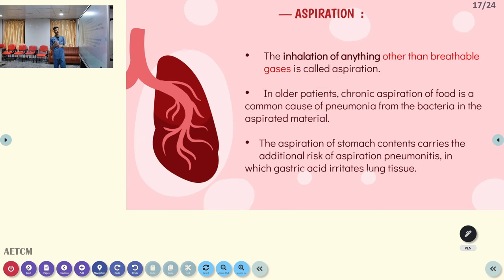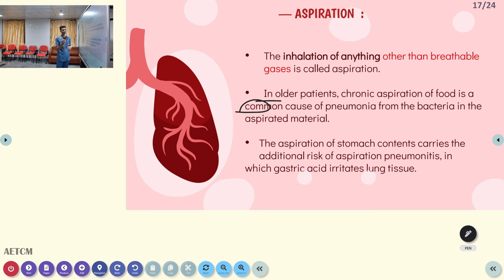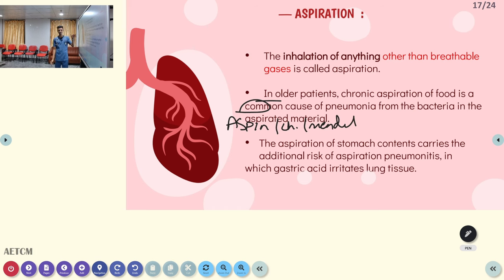Next condition is aspiration — inhalation of anything other than breathable air is called aspiration. It is most common in older patients and persons who have unresponsive or unconscious status. In older patients, chronic aspiration of food is a common cause of pneumonia from bacteria in the aspirated material. Older patients have a diminished gag reflex, so stomach content easily reaches the trachea, causing pneumonia — called aspiration pneumonia, chemical pneumonia, or Mendelssohn syndrome. Aspiration of stomach content also carries the additional risk of aspiration pneumonitis, in which gastric acid irritates the lung tissue.